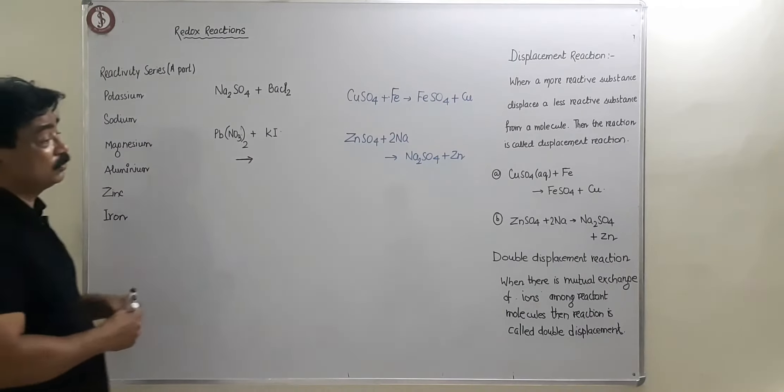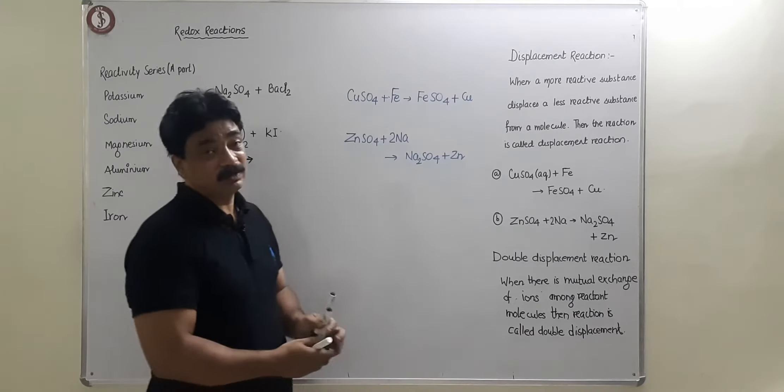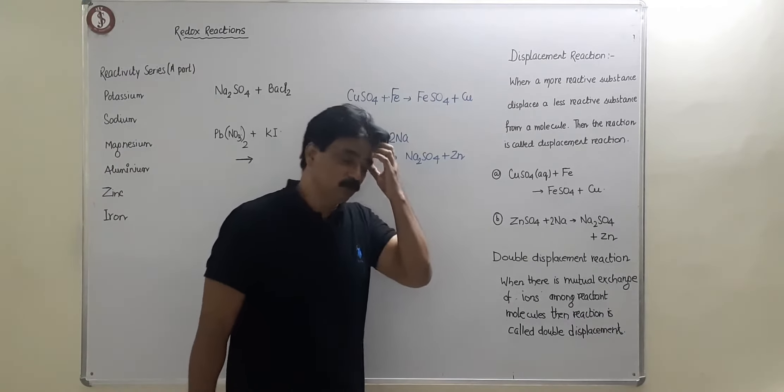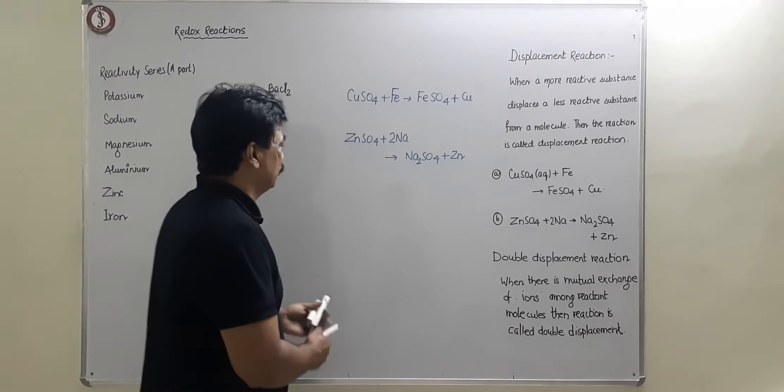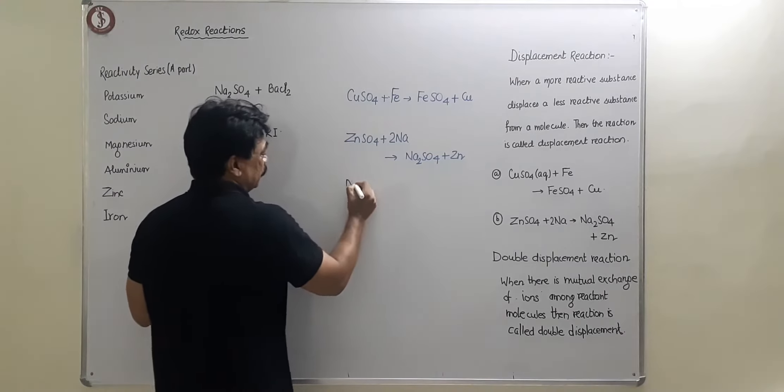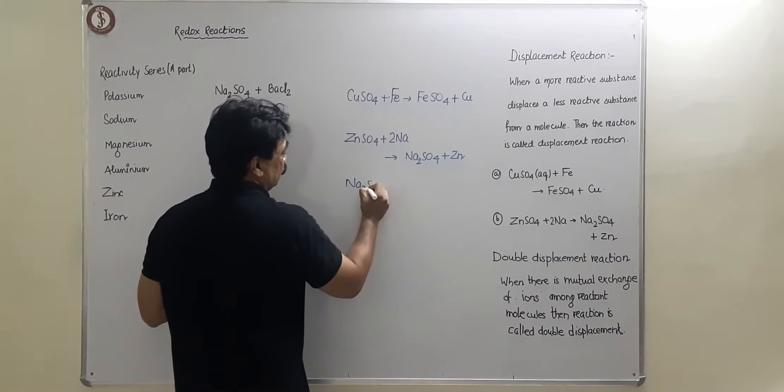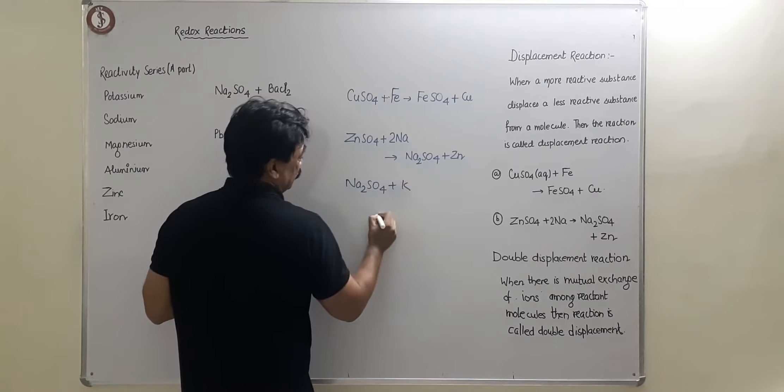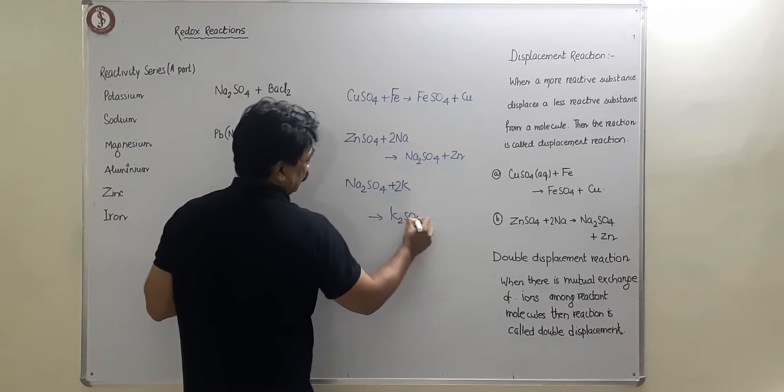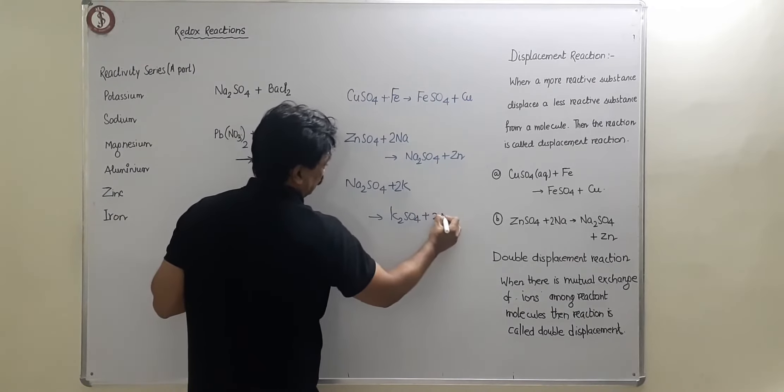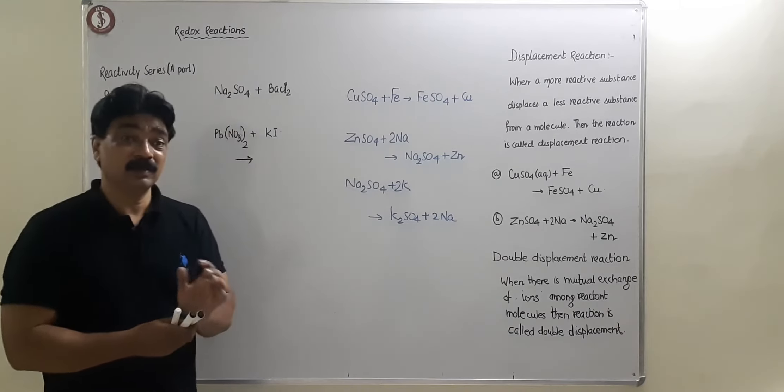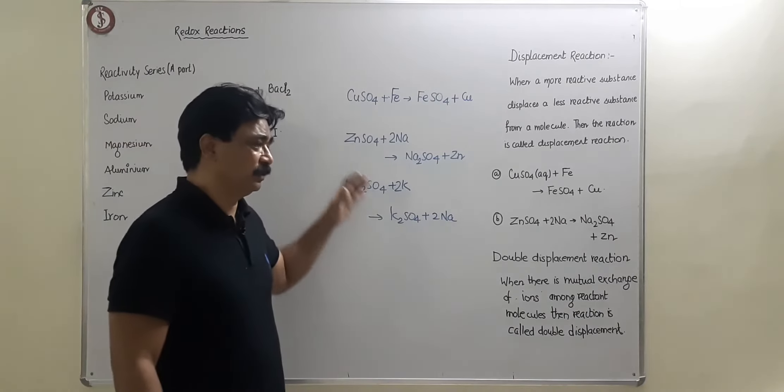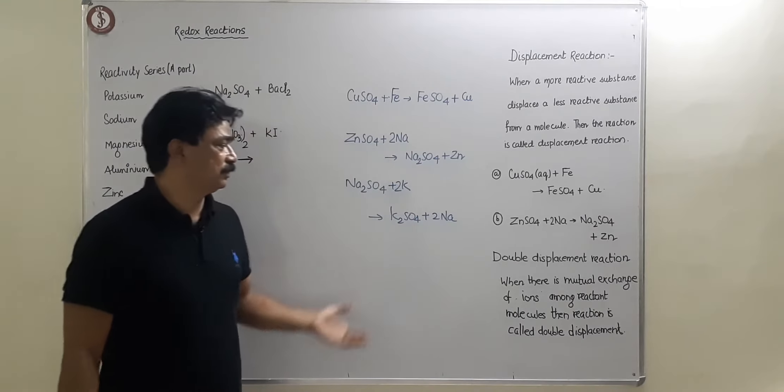You can be given equations and you have to tell which one is the most reactive. So there you have to be careful. Like I will give now this reaction, zinc is more reactive. And now above this I will give potassium. Now Na2SO4 plus K, then what will happen? Then K2SO4 will be formed plus 2Na will come out. Now I will give you these two reactions and tell you arrange in increasing or decreasing order of reactivity.